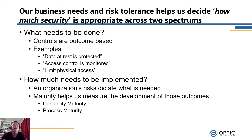We know the standards and regulations help us understand what needs to be done — things like protecting data at rest, monitoring access controls, and limiting physical access. These are the things needed for a robust cybersecurity program, but we need to understand how we're going to implement each of them appropriately.